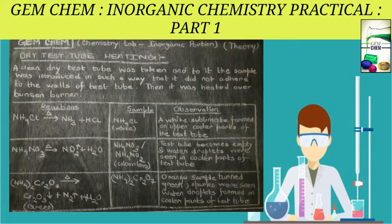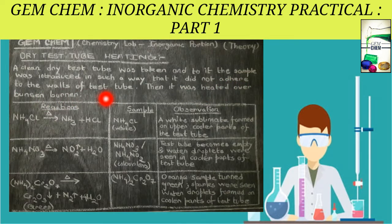Now we will deal with the first criteria: dry test tube heating. In the lab you will be given a few known samples and must do dry test tube heating. A clean dry test tube is taken and the sample is introduced such that it does not adhere to the walls, then heated over the Bunsen burner. When writing in a practical file, observations go on the ruled page and reactions on the white page.